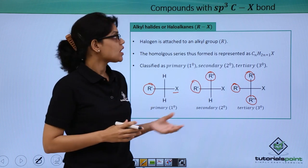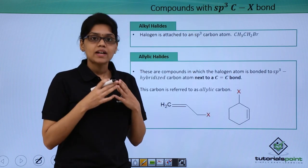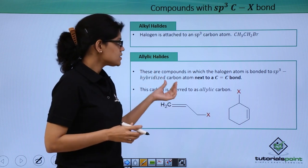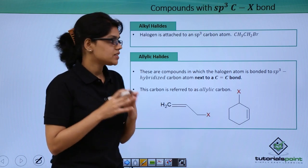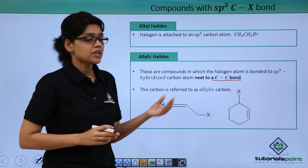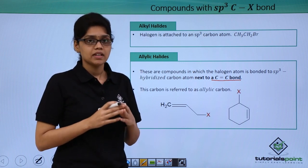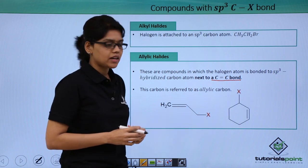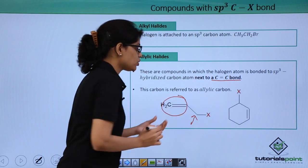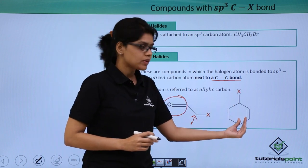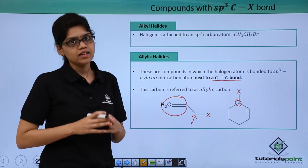The second class of compounds under sp³ C-X bond classification is called allylic halides. In allylic halides, the halogen atom is bonded to an sp³ hybridized carbon atom; however, it is adjacent to a C=C double bond, and that particular carbon atom is called an allylic carbon atom. As you can see in the structure, the carbon bearing the halogen has sp³ hybridization but is just next to a C=C group. The same thing can be observed in this structure as well — the C-X bond is adjacent to a C=C group.